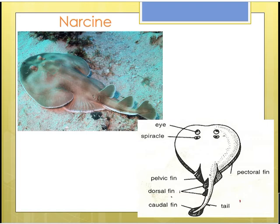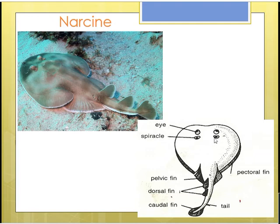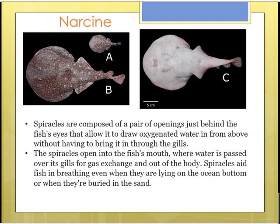Coming to the morphology of this organism, you can see a broad head which is rounded and dorso-ventrally flattened. This is the dorsal side and the other side is ventral. On the dorsal side we can see the eyes as well as the spiracles, as shown in this diagram.